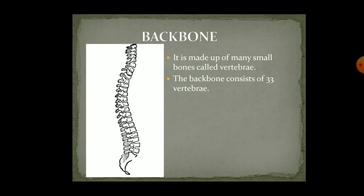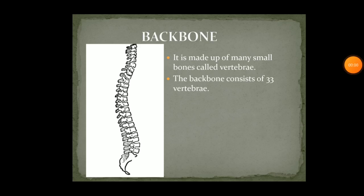The backbone is made up of many small bones which are known as vertebrae. In total, 33 vertebrae are present in the backbone. If the backbone were made up of one single bone, we would not be able to bend. Because there are small bones present, we can bend and also stand straight. That is because of the backbone.